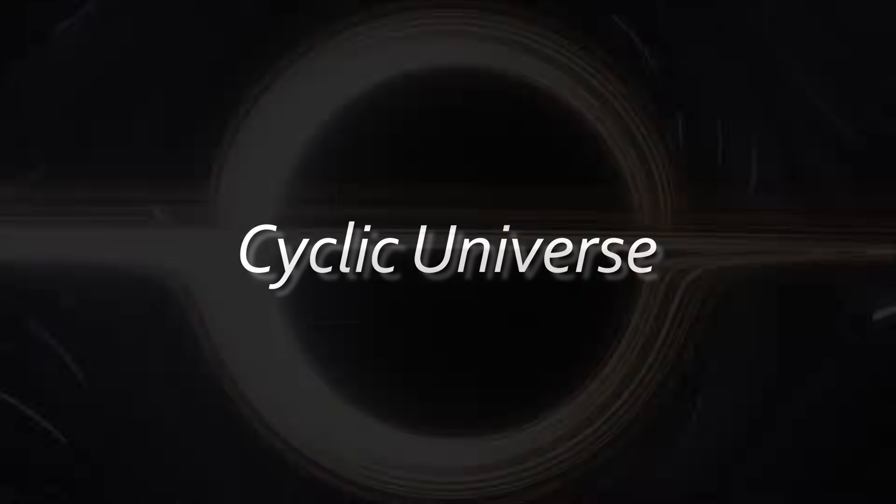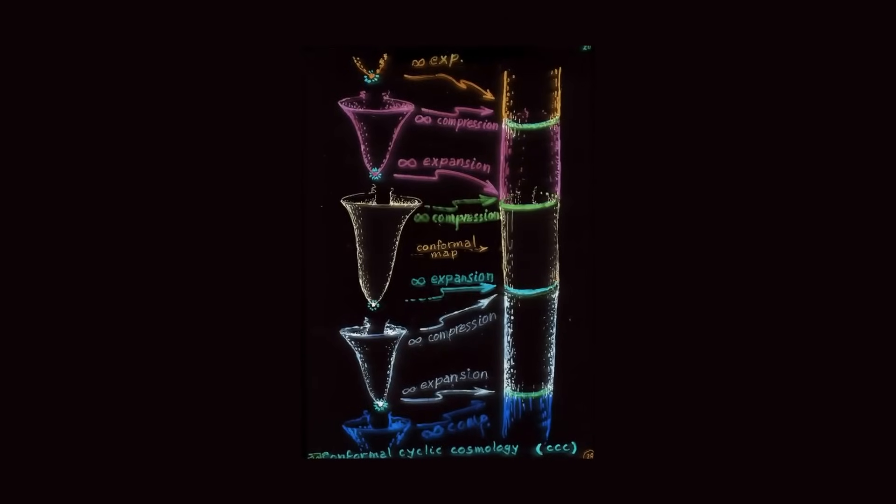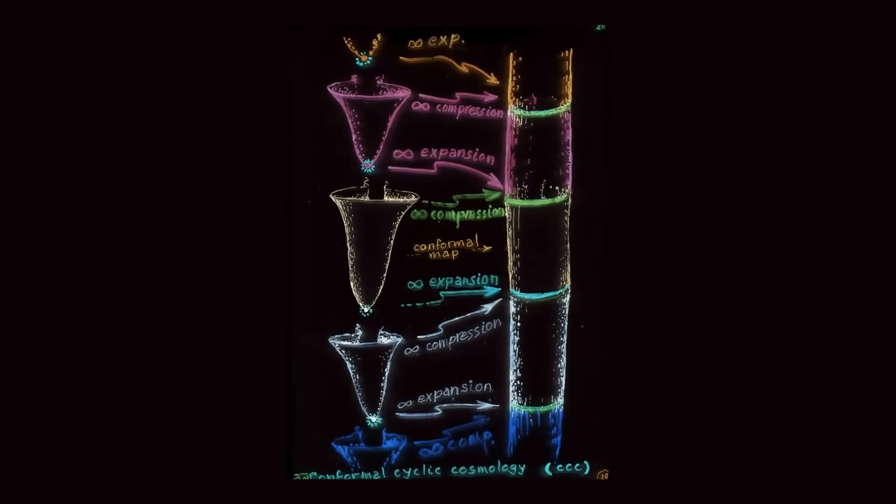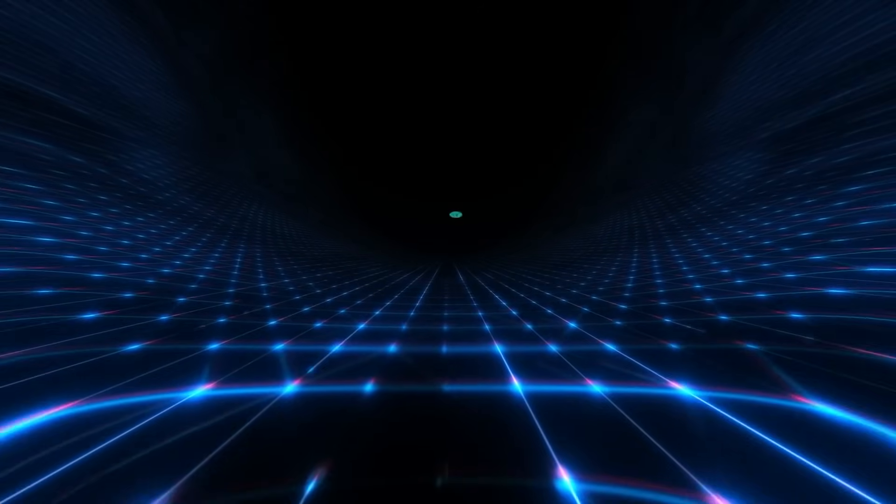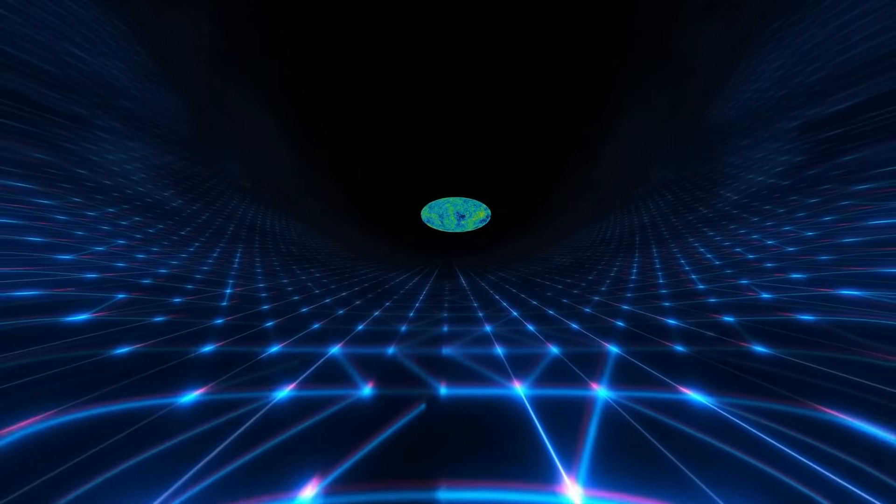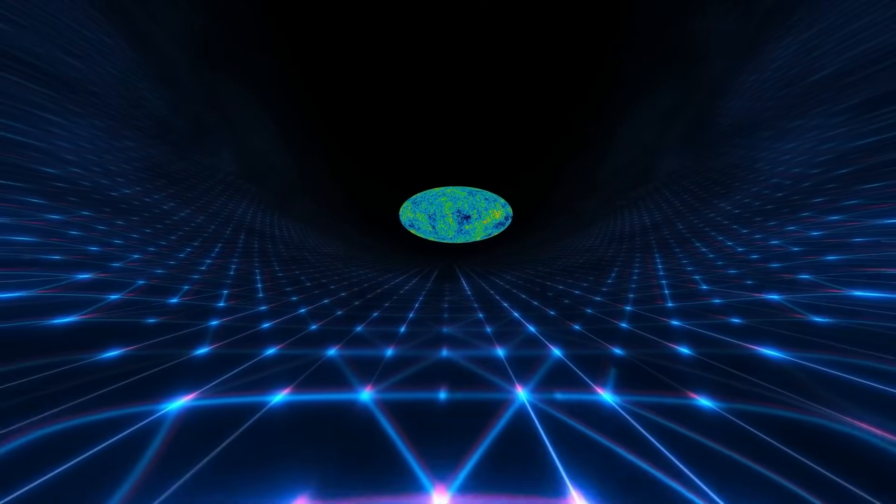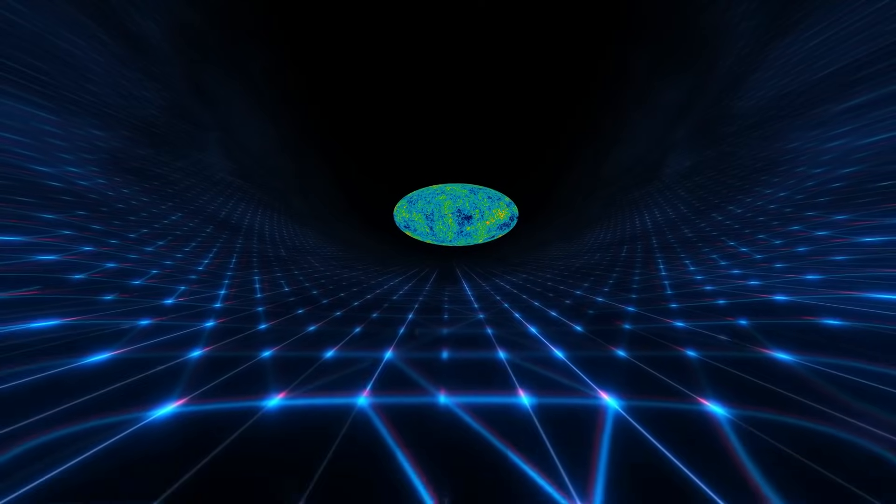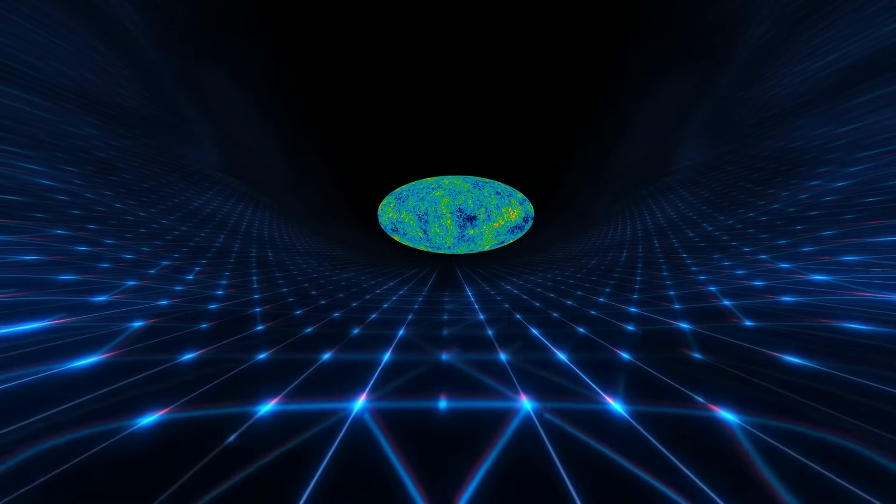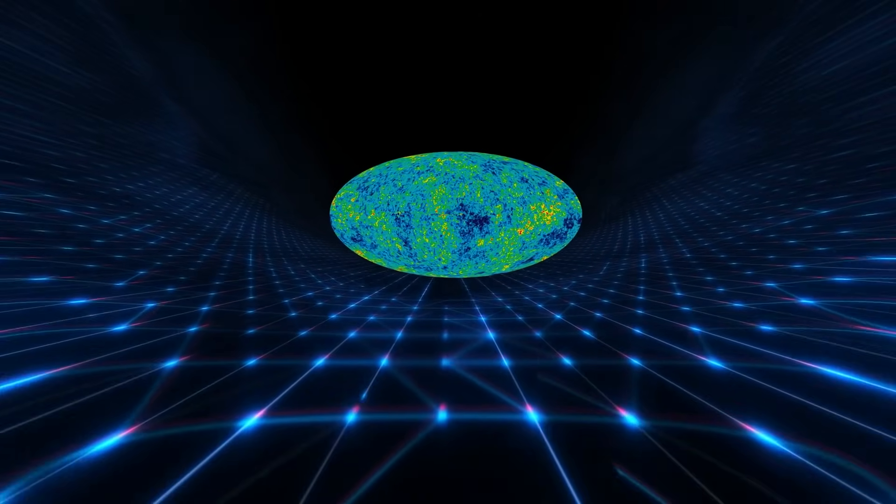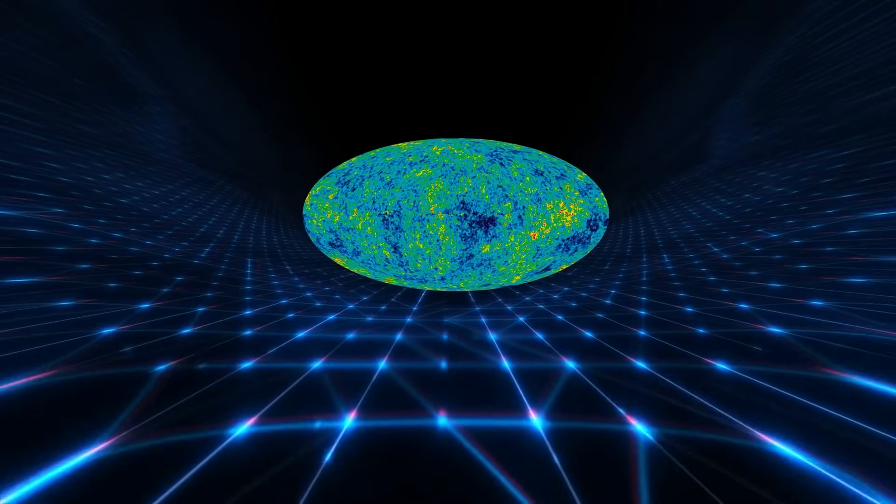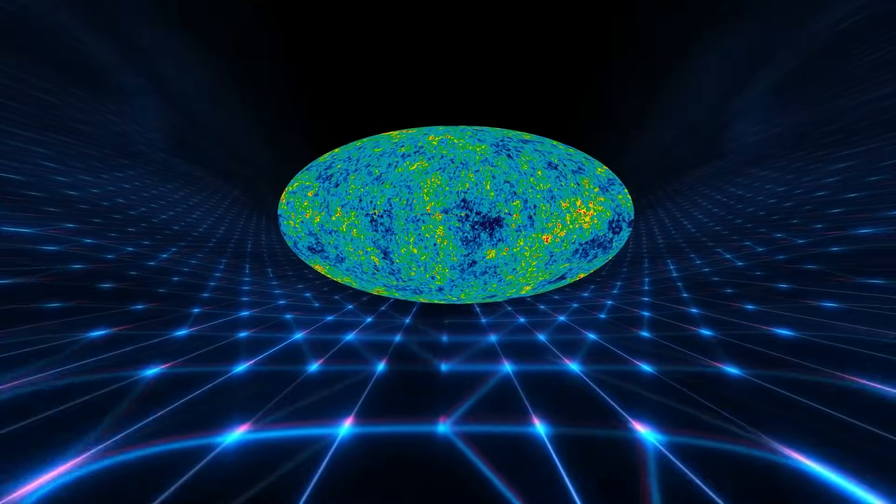The cyclic universe. Another theory posits that the universe goes through an endless cycle of expansion and contraction. In this model, the Big Bang is not the beginning, but rather a phase in an ongoing cycle. Before our universe's expansion, there would have been a previous contraction, leading to a previous Big Bang. This cyclic model avoids the need for a true beginning, but raises questions about the nature of time itself.